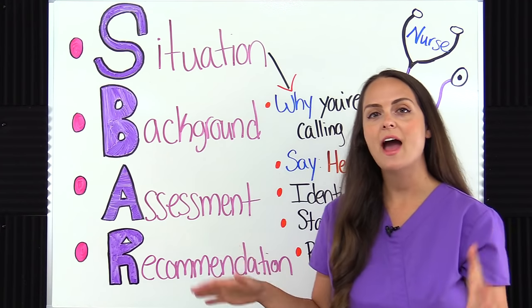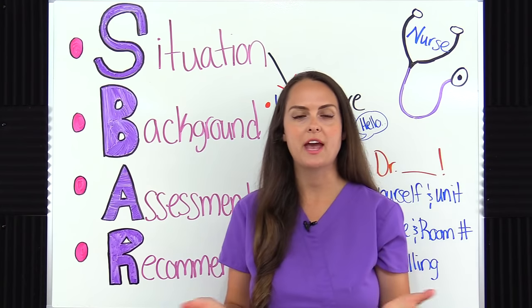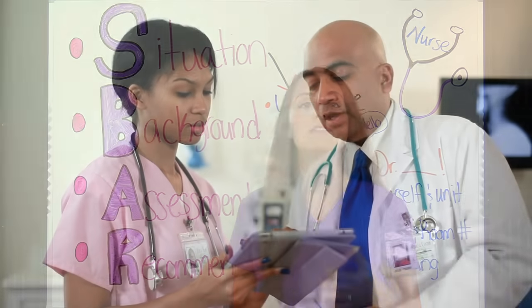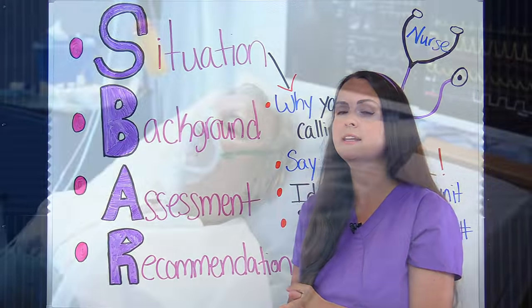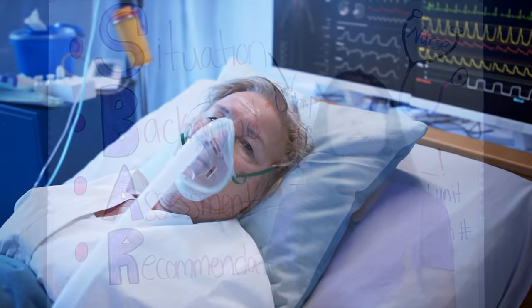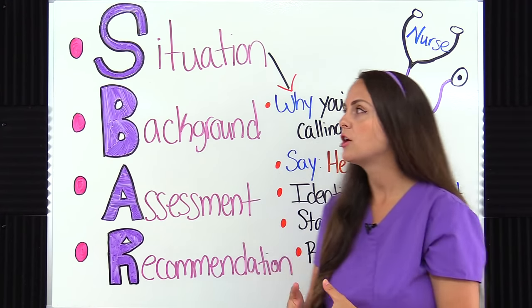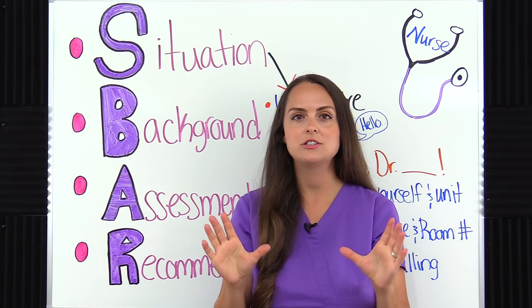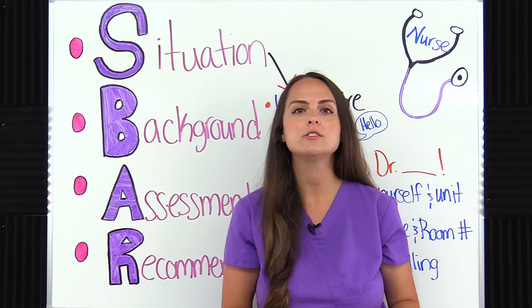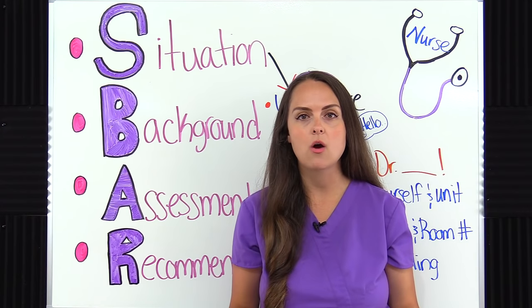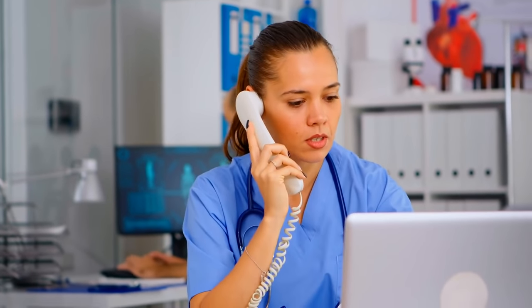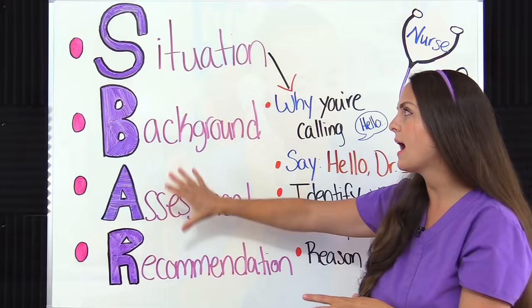What are some examples of how the nurse would use the SBAR to communicate? One way would be whenever a nurse needs to communicate with a healthcare provider like a physician, nurse practitioner, or PA — let's say the patient's condition is deteriorating and they need to call and report that, or they simply need something for that patient. The nurse can follow this tool to clearly and concisely communicate that issue, and that's what we're concentrating on in this video: how a nurse would communicate specifically with a physician about a patient issue.